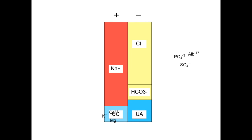The negatives consist of chloride, bicarbonate, and unmeasured anions, which include proteins, especially albumin, phosphates, and sulfates.